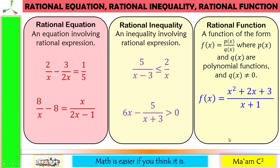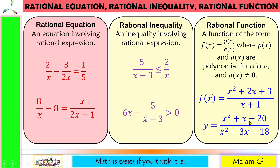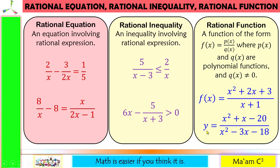Another one for rational function. So x squared plus x minus 20 is a polynomial. x squared minus 3x minus 18 is also a polynomial. We have the name of the function here, which is y, and an equal sign. So this is a rational function.